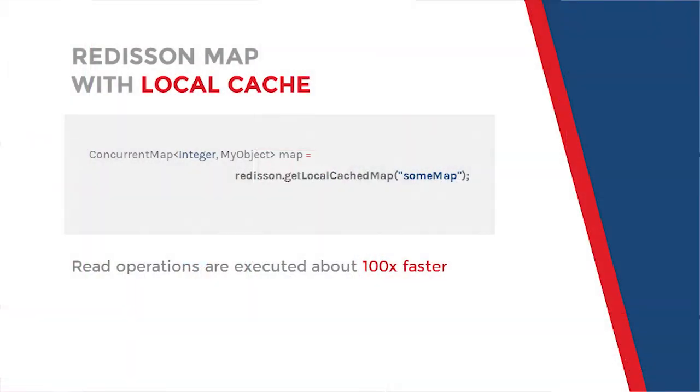Another most interesting map implementation is a local cache map. This object maintains the local cache, or so-called near cache. This cache resides on the application side. And this type of map structure is very useful in cases when the map is used mainly for read operations or when network round trips are undesirable. In this case, read operations with local cache are executed about 100 times faster in comparison with a map which uses Redis cache.